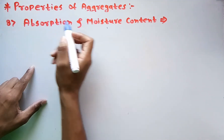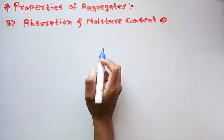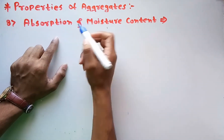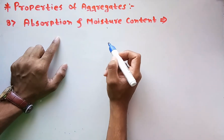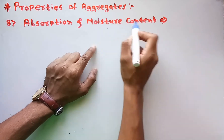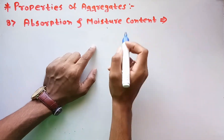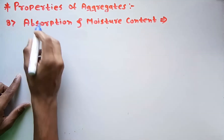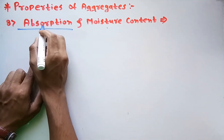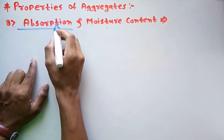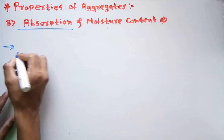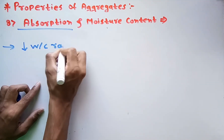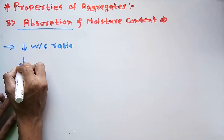The next property is absorption and moisture content. Some aggregates have absorption capacity due to their own voids or porous media, and some already contain moisture in their body — both affect the strength of concrete or mortar. In the absorption case, aggregates absorb water from the concrete or mortar, which reduces the water-cement ratio and results in decreased workability.